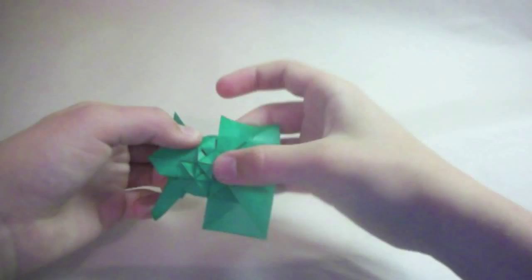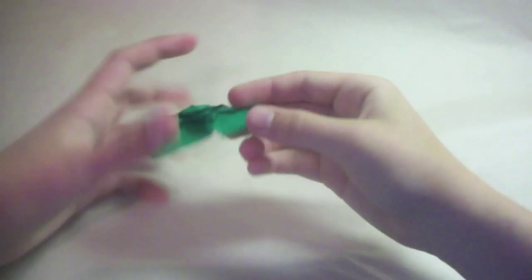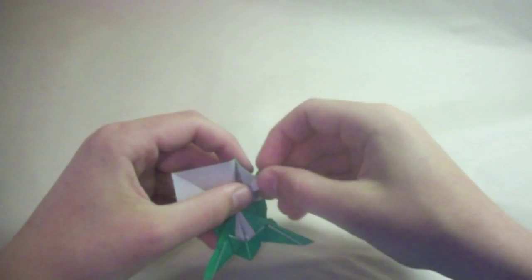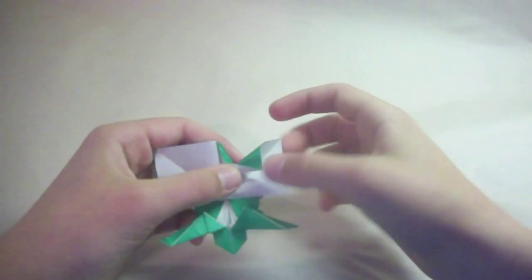Now for the back legs. The first thing we're going to do is we're going to make a kind of squash fold here. So we'll fold this flap and make a squash fold on this layer. I like to start making the squash fold here and then fold the flap in to the center. Like that.